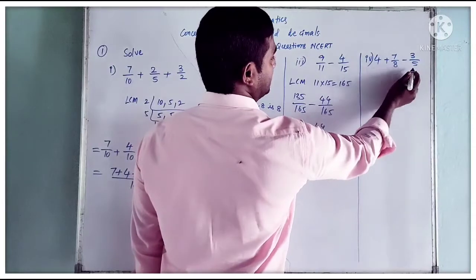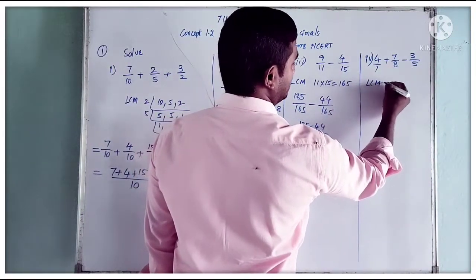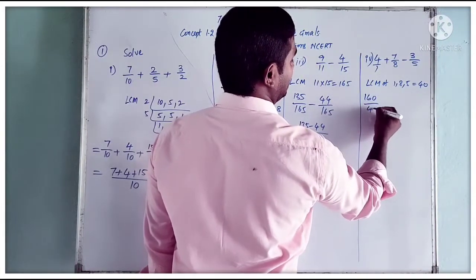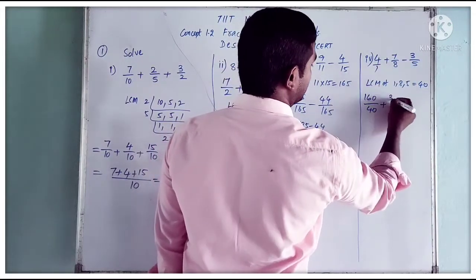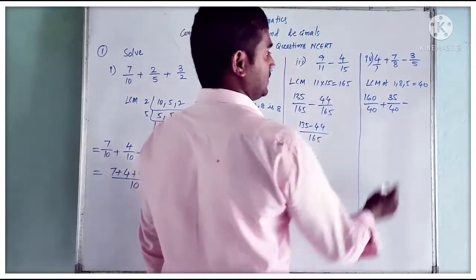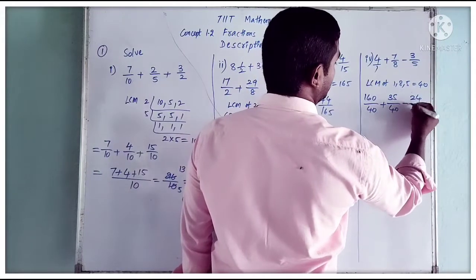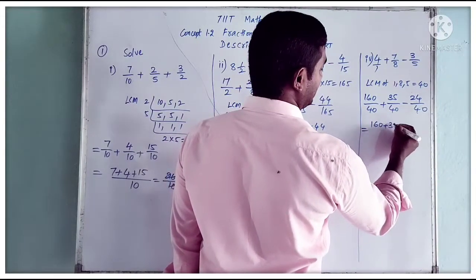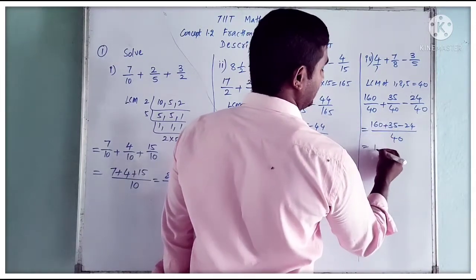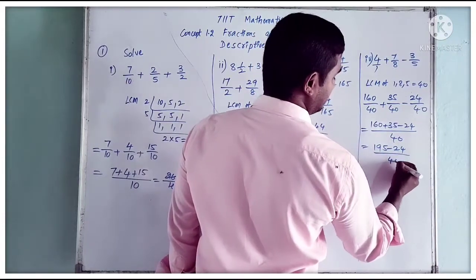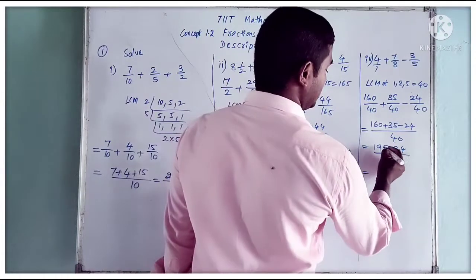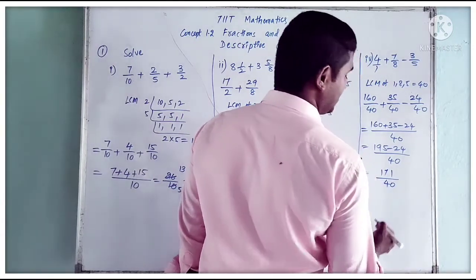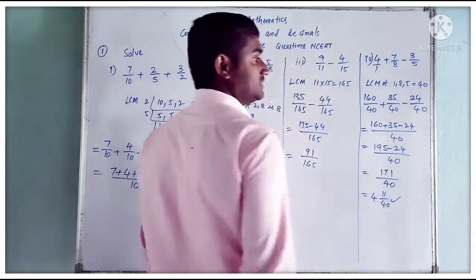Next question: 4 plus 7 by 8 minus 3 by 5. The whole number 4 has no denominator, so you can write it as 4 by 1. LCM of 1, 8, 5 equals 40. So 4 by 1 becomes 160 by 40. 7 by 8 multiplied by 5 becomes 35 by 40. 3 by 5 multiplied by 8 becomes 24 by 40. Now: 160 plus 35 minus 24 by 40, which is 195 minus 24 equals 171 by 40, or in mixed fraction, 4 and 11 by 40.